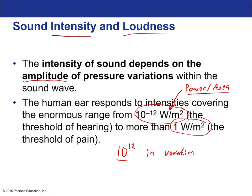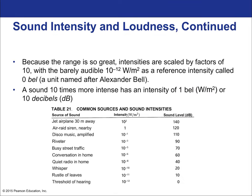There we have a trillion-fold variation in terms of the lowest to the highest loudness that can be perceived. Because the range is so great, intensities are scaled by factors of 10, with barely audible being 10 to the negative 12 — that reference intensity is called zero bel, a unit named after Alexander Bell. A sound 10 times more intense has an intensity of one bel, or 10 decibels.